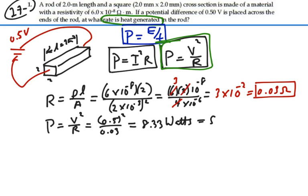Or 8.33 joules per second, which is a watt. So that is our answer. That's the power generated in this rod, and hence the rate of heat generated in the rod.